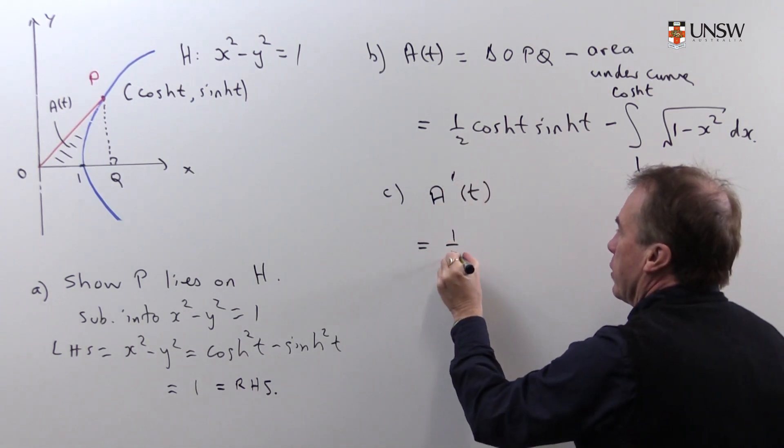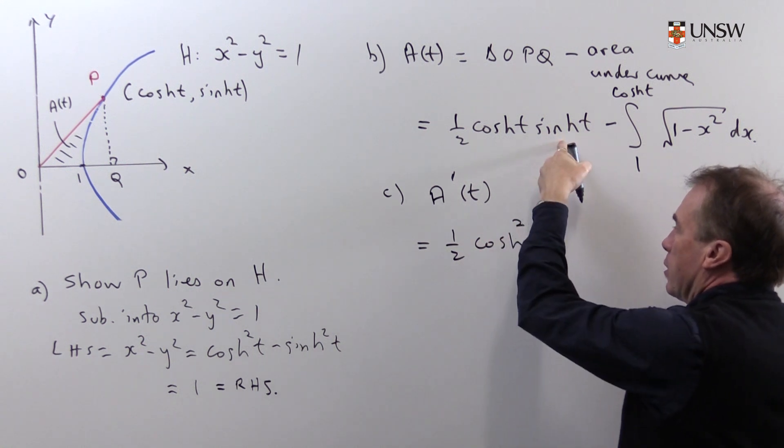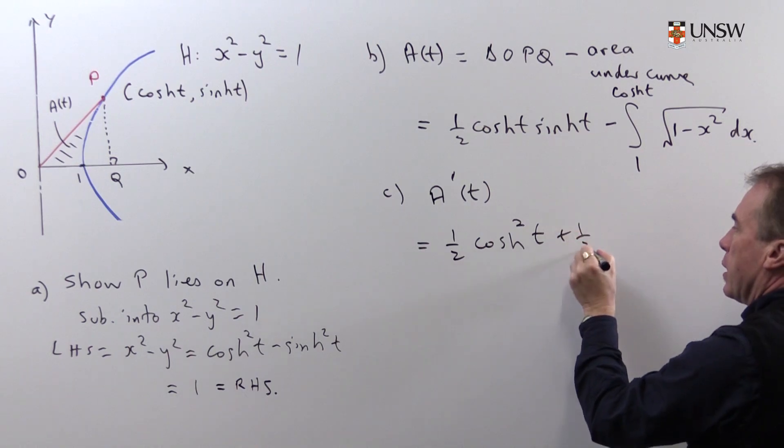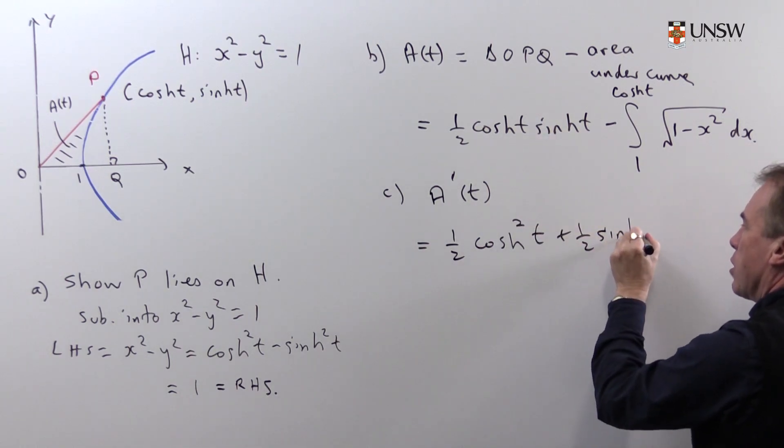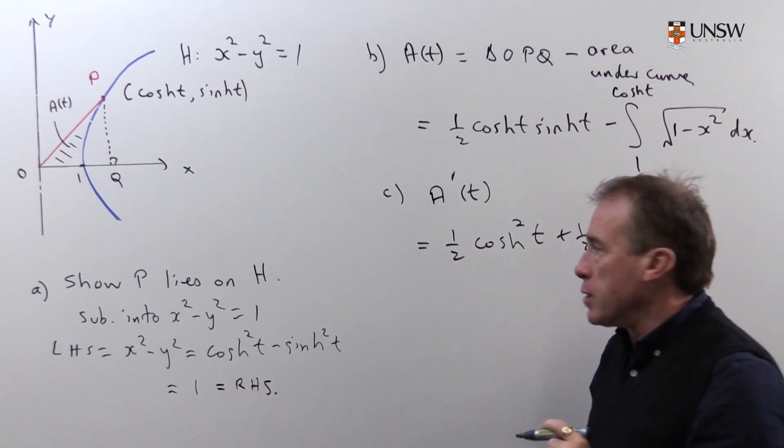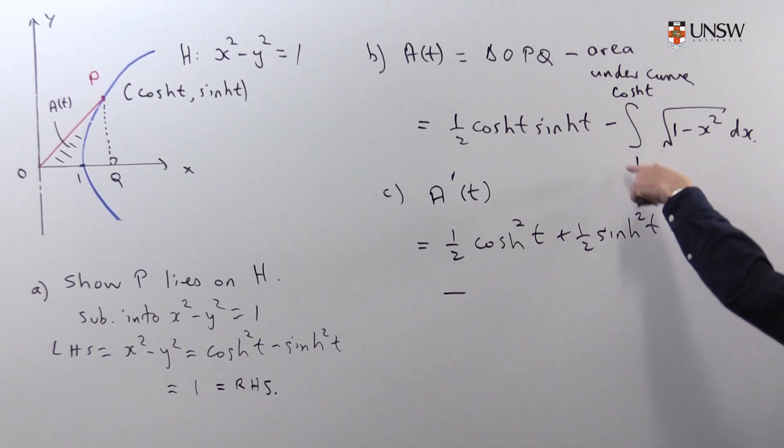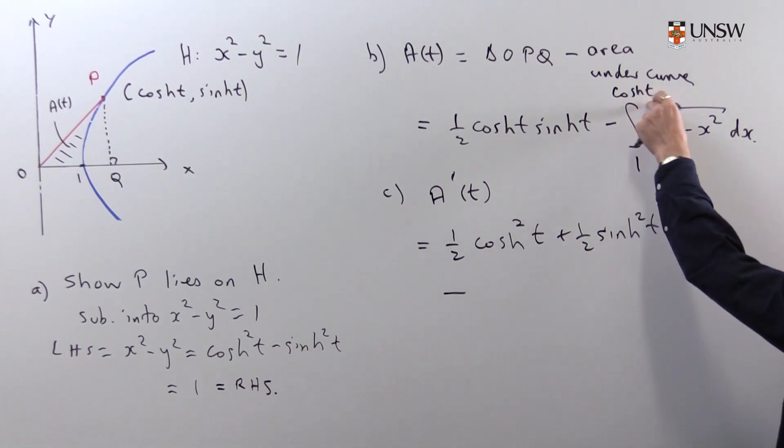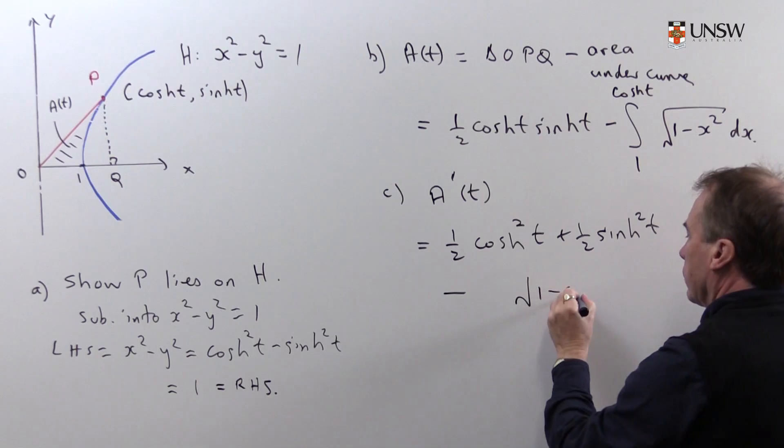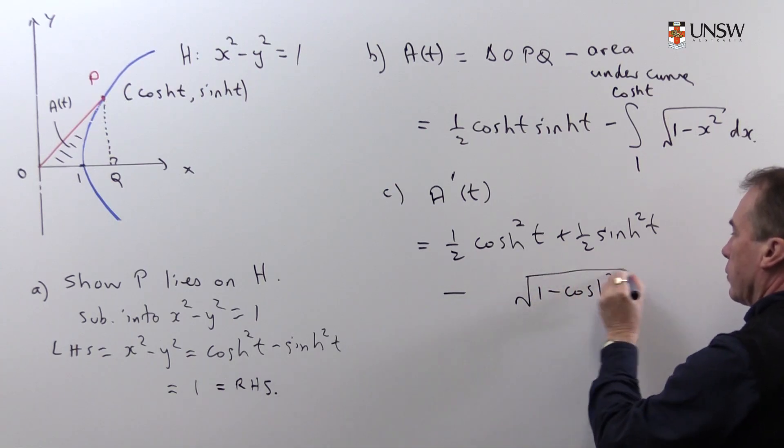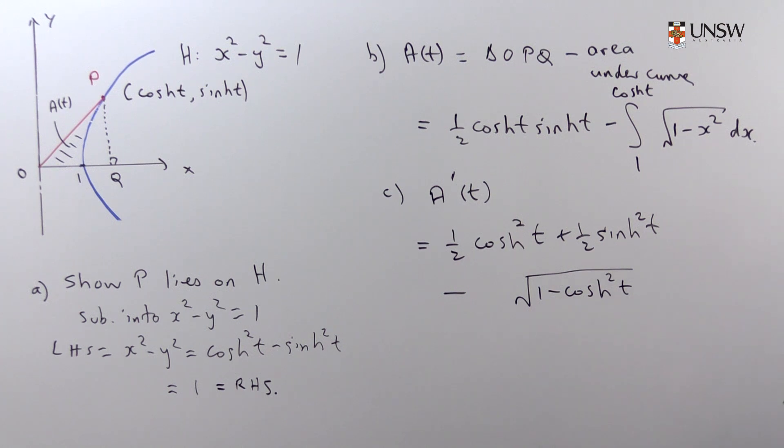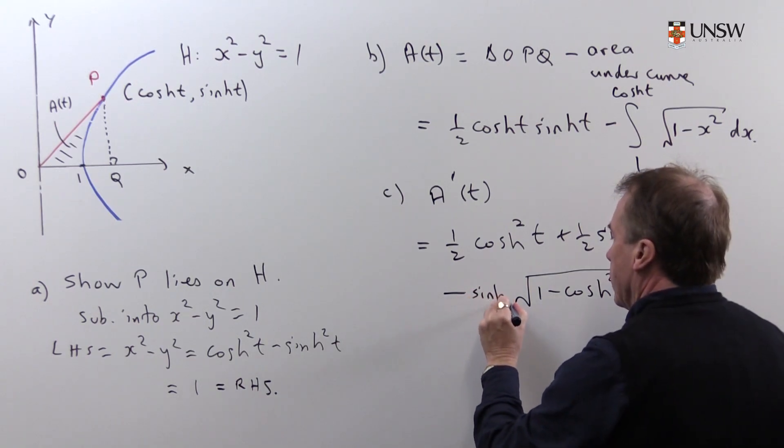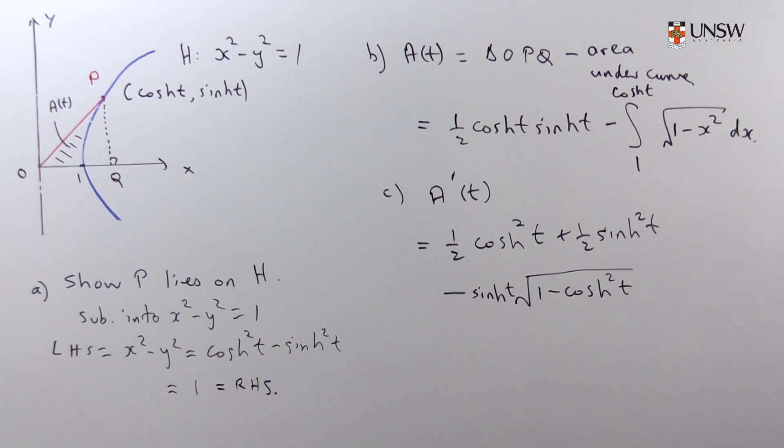I'm going to differentiate. So what do I do? I copy the first, I differentiate the second, so that's going to become another cosh. And then I copy the second, differentiate the first, that becomes sinh. So I get one-half cosh squared plus one-half sinh squared minus. Now, when I differentiate this, I'm going to use the fundamental theorem of calculus. So all I'm going to do is I'm going to replace the x in here with the cosh of t. And then I'm going to multiply by the derivative of what's upstairs here, the cosh, and that gives me a sinh. So it's just a typical example of using the fundamental theorem of calculus plus the chain rule.